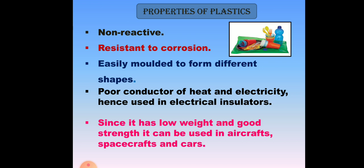The properties of plastics: Plastic is non-reactive and resistant to corrosion. Plastic is easily molded to form different shapes and is a poor conductor of heat and electricity, hence it is used in electrical insulators. Since it has low weight and good strength, it can be used in aircraft, spacecraft, and cars.